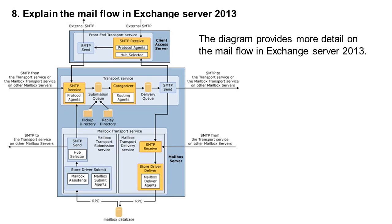Explain the mail flow in Exchange Server 2013. The diagram provides details on mail flow. Internal and external SMTP connections come in; the Client Access Servers directly redirect all connections to the Transport Service. The Transport Service has a submission queue, SMTP receive, protocol agents, pickup directory, and replay directory. It categorizes messages and routes them to the delivery queue. The Mailbox Transport Service also runs on the Mailbox Server. The Front-End Transport Service runs on Client Access Servers. The Mailbox Transport Service communicates with the Mailbox Database using the RPC protocol.